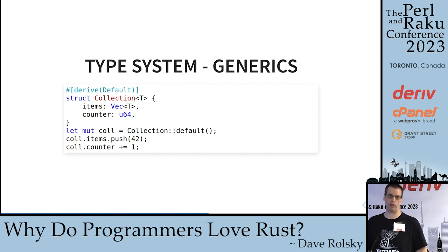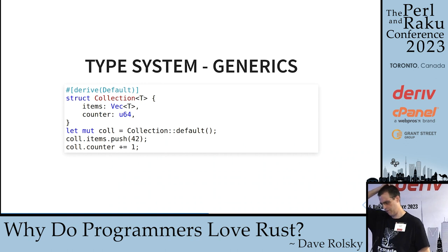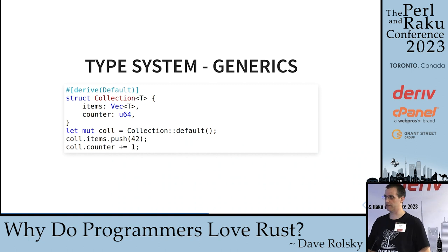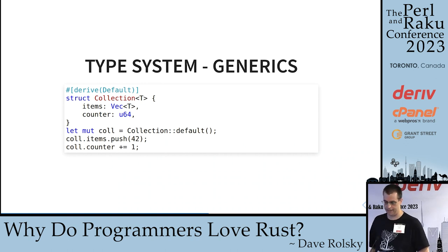We can also make our own generic types. Here's a type called Collection with a type parameter T — it contains a field called 'items' which is a Vec of T. This is a totally pointless struct since it's already built into the language, but it's a very simple example. One thing to note: we don't actually specify the type of the Collection value — Rust just figures it out. It says 'oh okay, eventually you push an integer into it, so T in this particular case is this integer type.' Default is a trait you can derive automatically; if everything in the struct also implements Default, it cascades through. The compiler infers the type. Very nice.